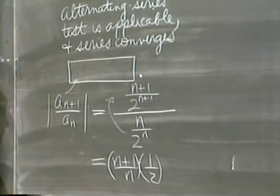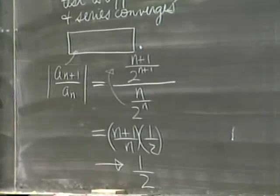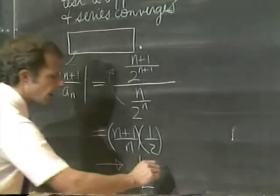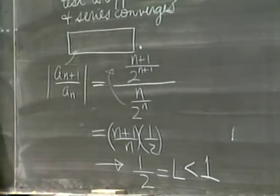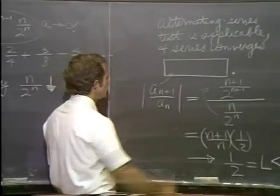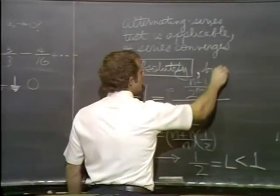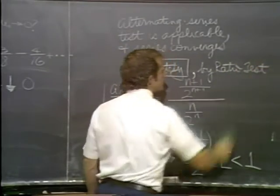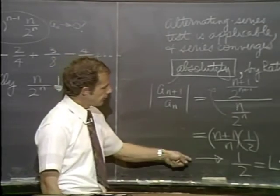Well, what's n plus 1 over n converge to? 1. Good. So this in the limit converges to 1 half. The first factor goes to 1. Then, I call that L, and last time I told you, if that limit of the ratios converges to something that's strictly less than 1, the series converges.